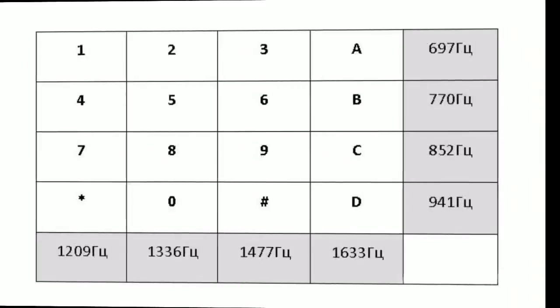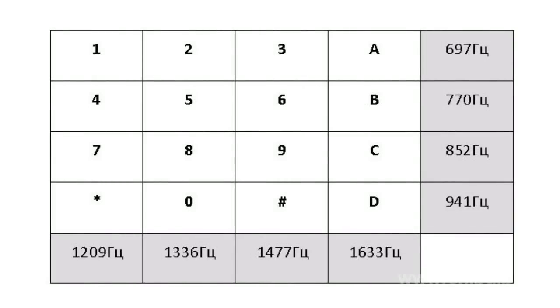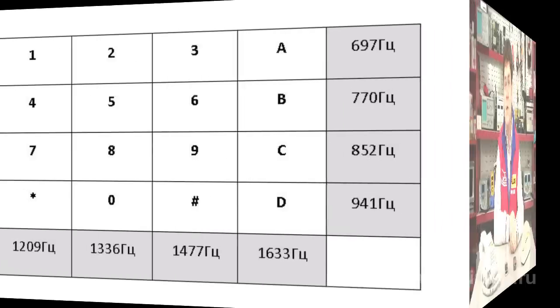If you sound signals of two different frequencies, you get a third frequency tone corresponding to a definite number or symbol, as presented in the table. So when you dial a telephone number, you are consequently transmitting to the dial office the tones corresponding to the numbers.